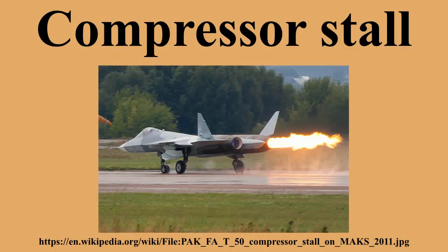The 1977 loss of Southern Airways Flight 242, a Douglas DC-9-31, while penetrating a thunderstorm cell over Georgia was attributed to compressor stalls brought on by ingestion of large quantities of water and hail, which blocked bleed air removal from both of its Pratt & Whitney JT8D-9 turbofan engines. The stalls were so severe as to cause the destruction of the engines, leaving the flight crew with no choice but to make an emergency landing on a public road. 62 passengers and another 8 people on the ground were killed.